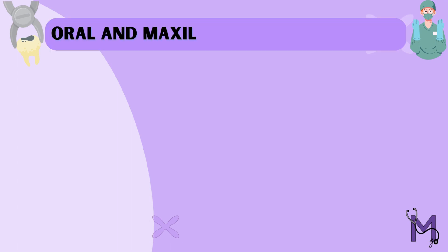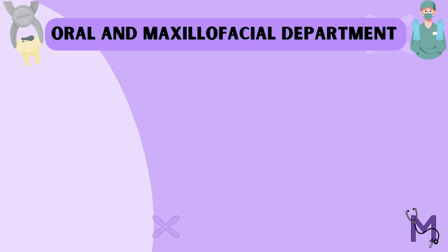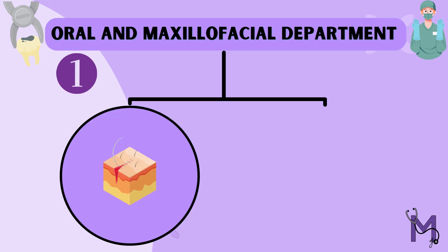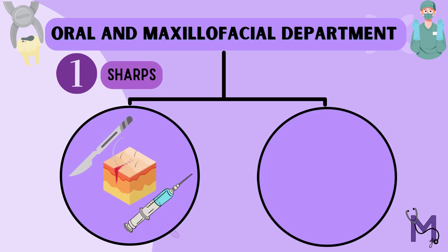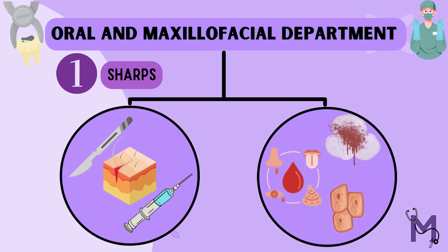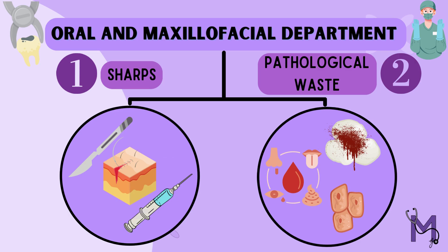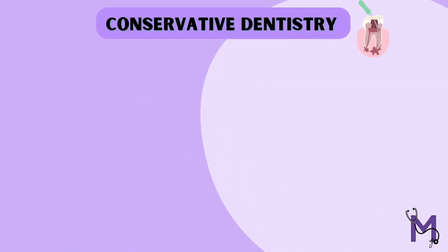For example, in the oral and maxillofacial department, it is most common to find mainly two types of waste. First are the sharps, which could be in the form of needles or blades. Human tissue or fluids — like body parts and blood — are examples of pathological waste, which may also be commonly found in this department.